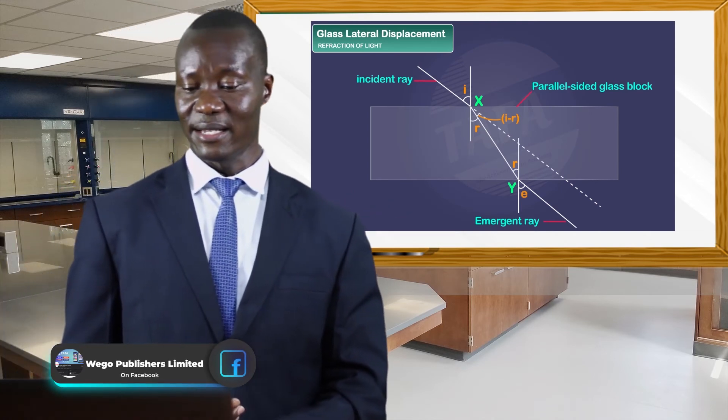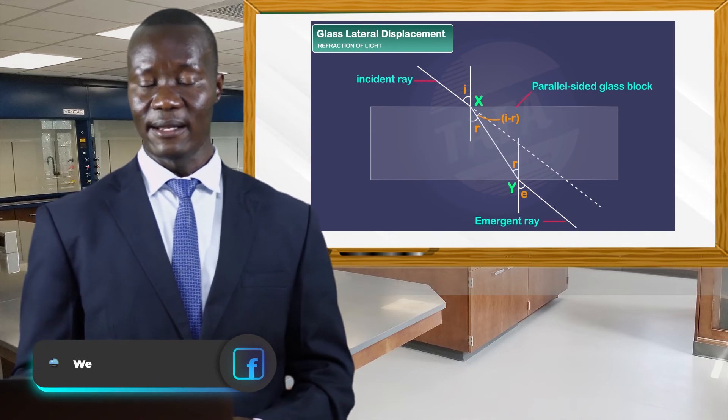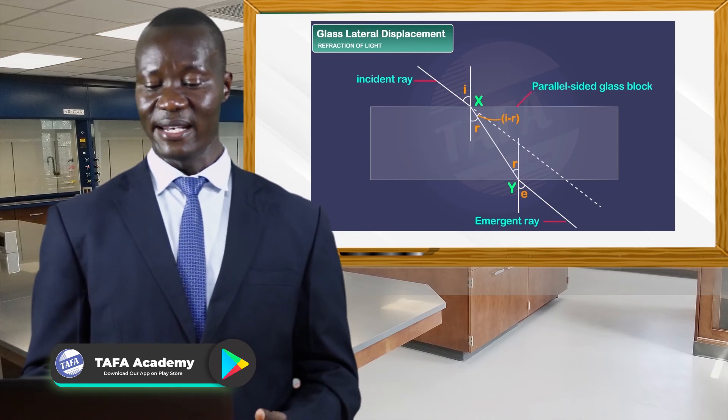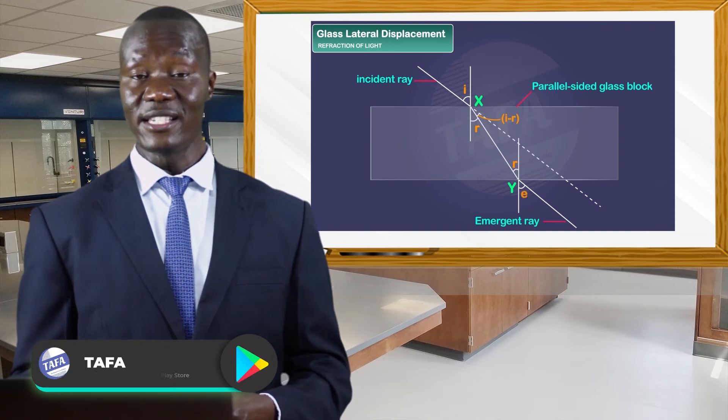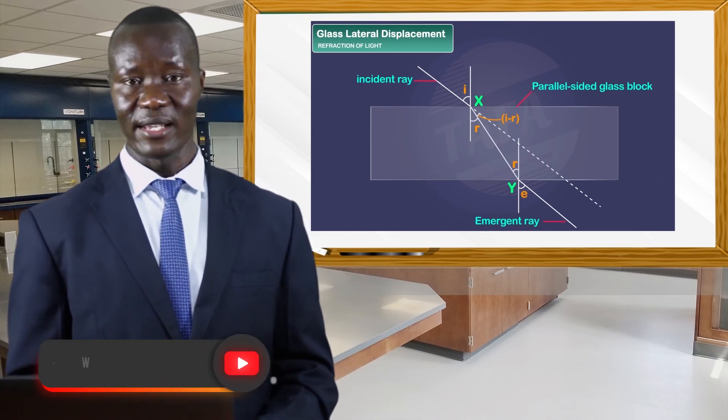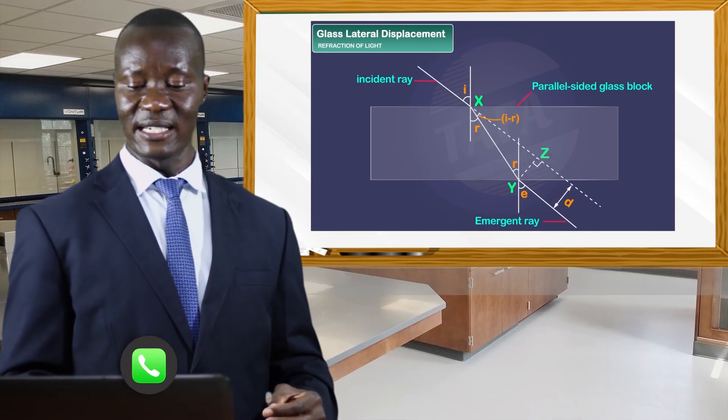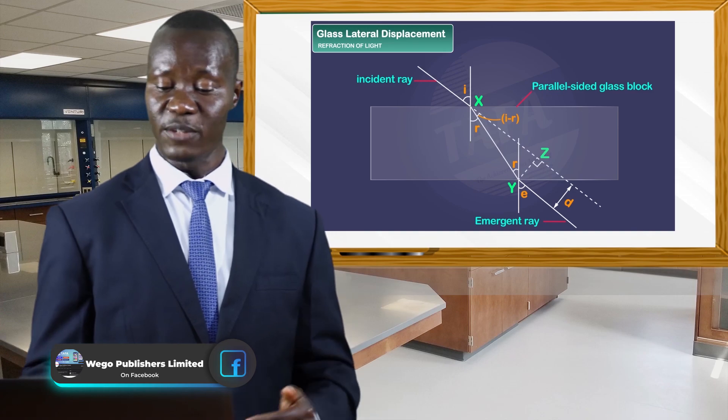Having extrapolated the incident ray, you can see that the emergent ray and the original path of the incident ray are parallel to each other. The diagram represents the lateral displacement that this ray suffered from the original direction to a path highlighted as Y and D. That is how lateral displacement comes about.